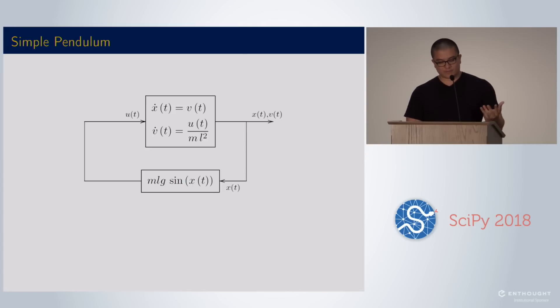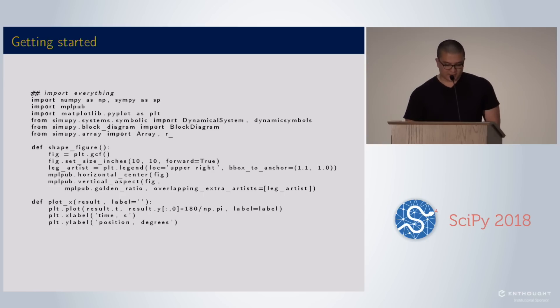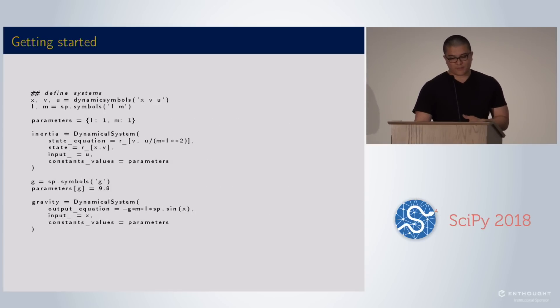Now we want to put this into SimuPy. This is a bunch of importing and a couple of helper plot functions. This is how we define a symbolic dynamical system. We'll also be defining dynamical systems using just functions.